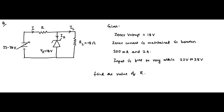Hello friends. Here we are with another question on Zener diode circuits. This is the circuit which is given. Here you can see this circuit is a variable source and fixed load type. The input voltage which is present is variable — it is fluctuating — and the load resistance is fixed.